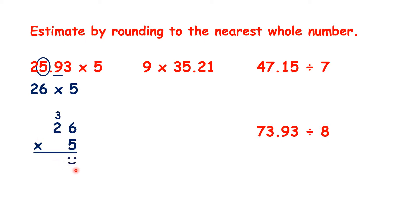Using column multiplication, we have 130, so our answer to 25.93 times 5 should be something close to 130, or something just a little bit less than 130, because to get our rounded estimate, we rounded up.